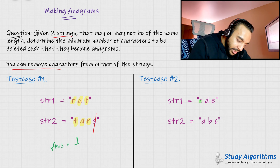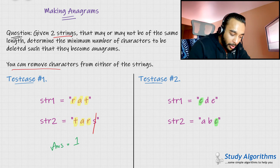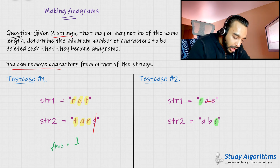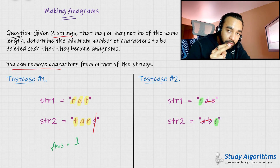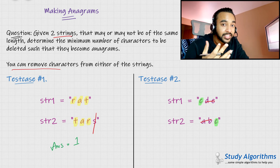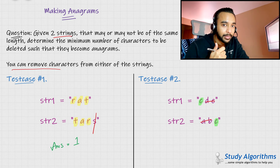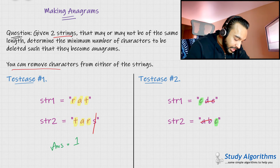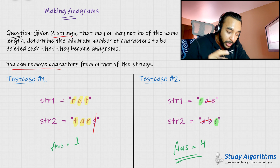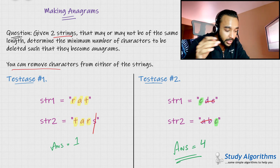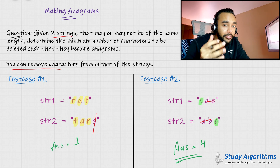In our second test case, you can see that C exists in both of them. Neither D, nor E, nor A, nor B is common in both strings. Hence, you will have to delete a total of four characters to make both of these strings anagrams. A single character is also an anagram by the way, because it contains the same number of characters and the exact same character. Hence in this case, your answer would be four — because you are deleting a total of four characters: D, E, A, and B. If this problem statement is clear to you, feel free to try it out on your own. Otherwise, let us dive into the solution.